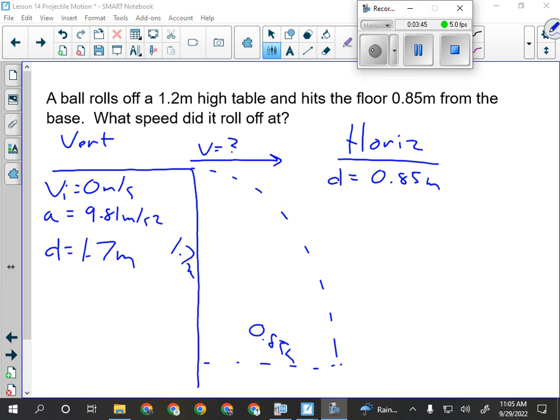Before we do this one, so in this one, we are looking for the speed, the horizontal speed, in this case, that the ball rolls off the table. We know the table is 1.2 meters tall. And we know that it hits the ground 0.85 meters horizontally from the base of the table, so that's its horizontal distance traveled.